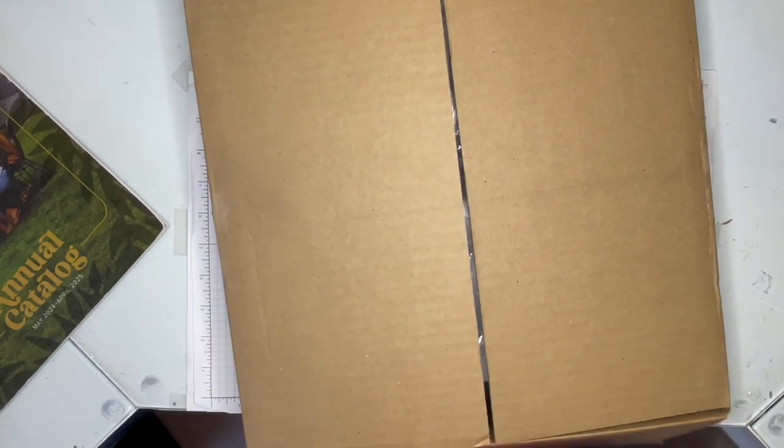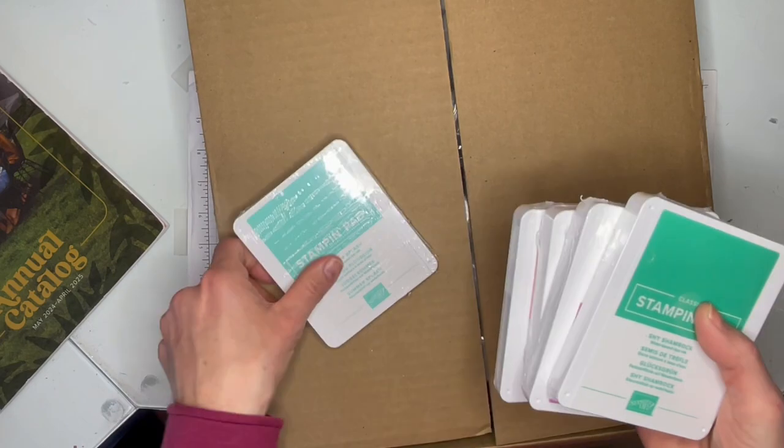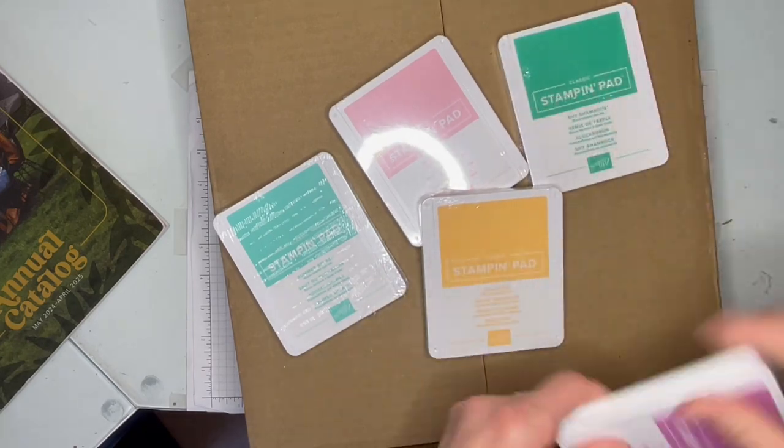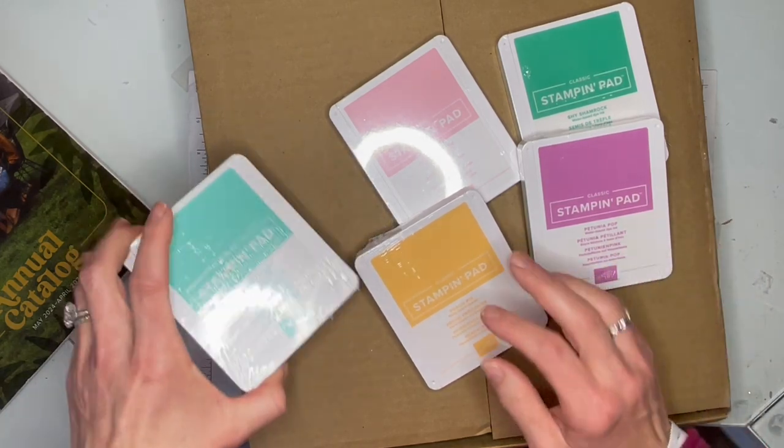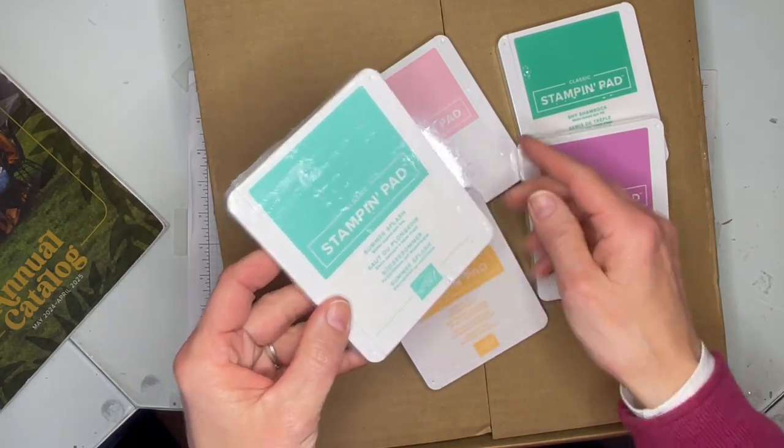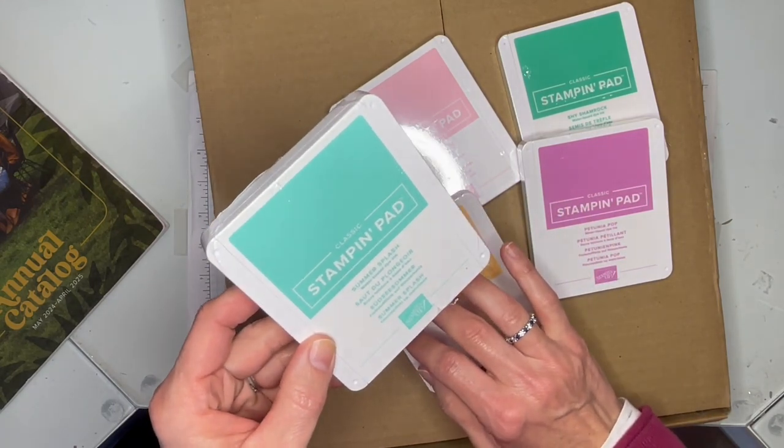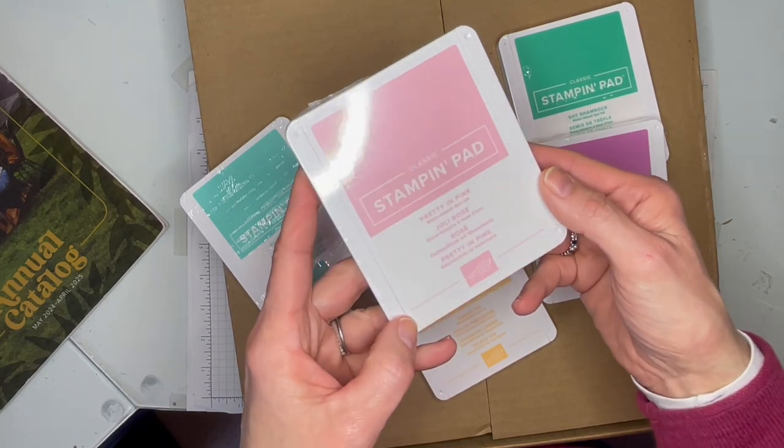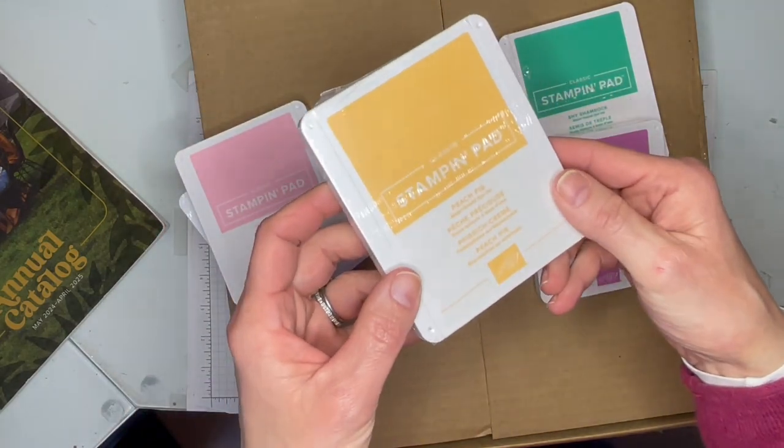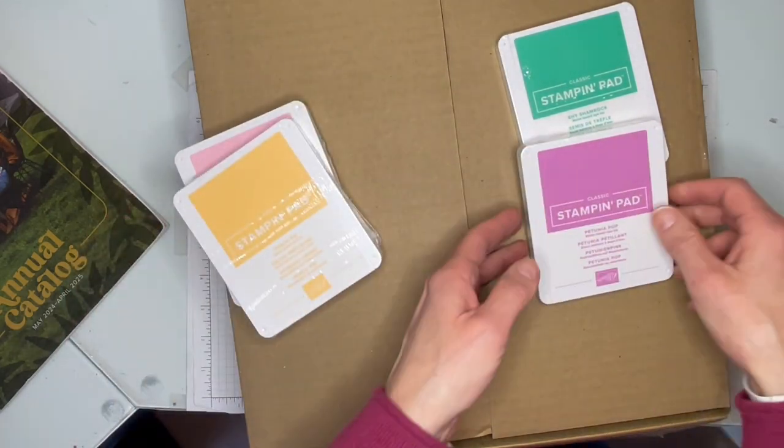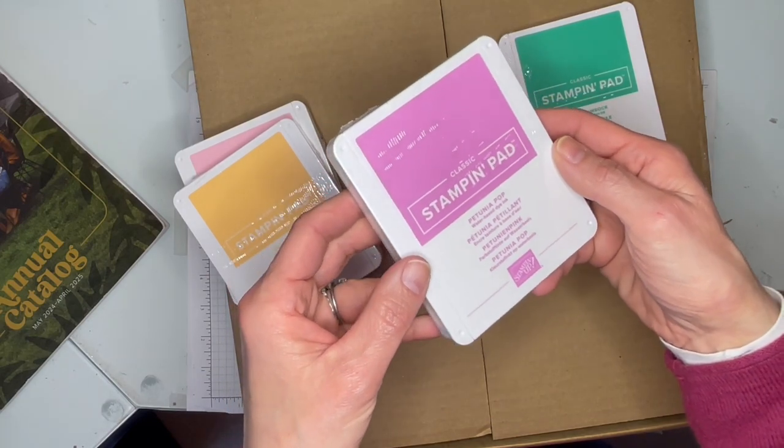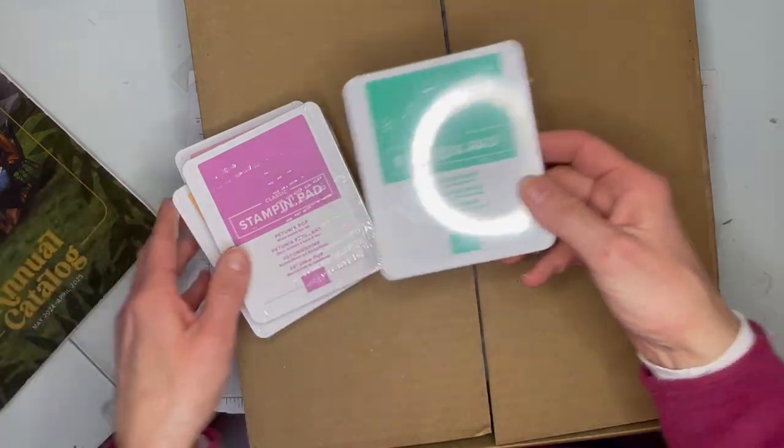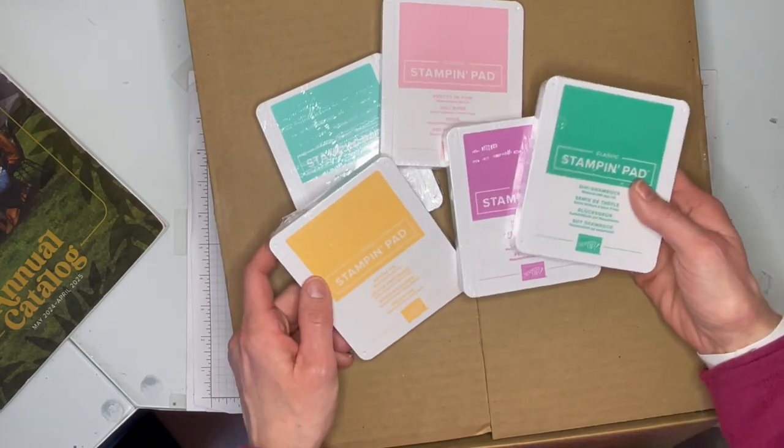Before I actually even open it, I'm going to show the five new in colors. These were shipped separately. So this one still has the plastic on it, but it's called Summer Splash. It's pretty, similar to Coastal Cabana, a little bit different. This one is Pretty in Pink, a nice classic pink. This one is called Peach Pie. And then this one is Petunia Pop, kind of a plummy pinky purple. And then Shy Shamrock, which is a nice green.